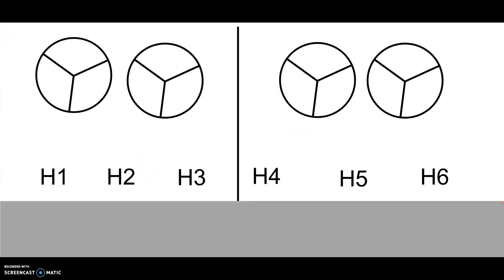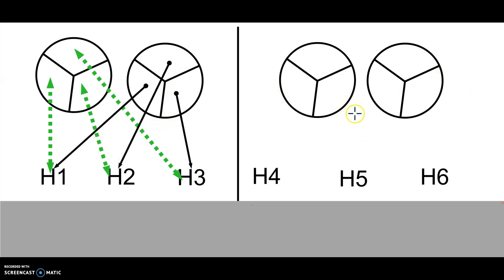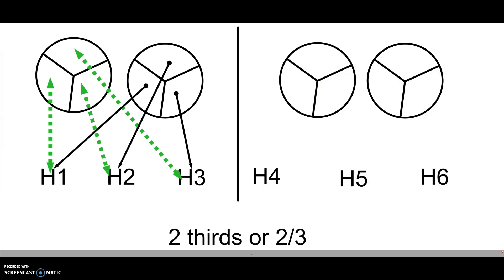This time, I divided the pounds evenly so that each group of three hikers shares from two pounds. Hikers 1, 2, and 3 will share from these two pounds; hikers 4, 5, and 6 will share from these two pounds. I divided each pound into thirds. From each pound, hiker 1 gets a third, hiker 2 gets a third, and hiker 3 gets a third — and the same for hikers 4, 5, and 6. So how much did each hiker get? Two thirds — written as a fraction, two thirds.